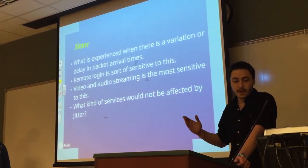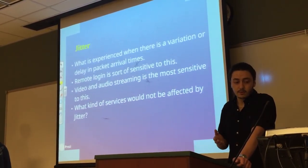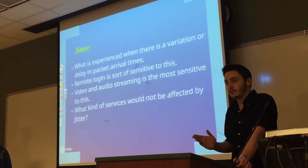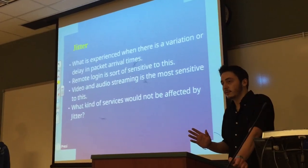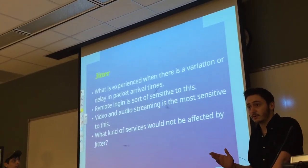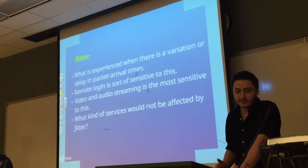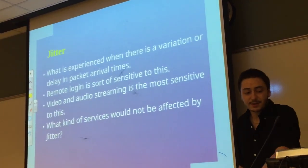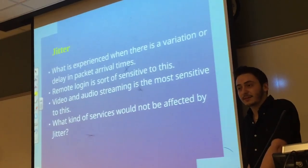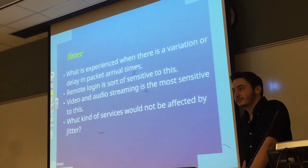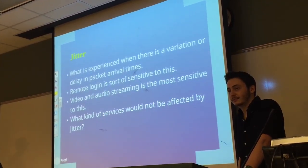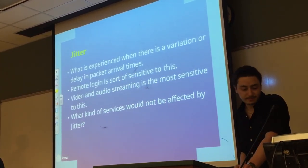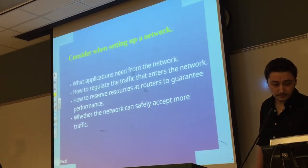Jitter. Unlike telephones, network traffic and data is very inconsistent. You could stream a video at one point with a lot of high data, or you could just open an email. Jitter is when there's a delay in packet arrival times. Remote login is sensitive to this — if you're using it you can sort of tell if there's a lag or a jitter. It's very noticeable, as opposed to something like an email where it's not a big deal.